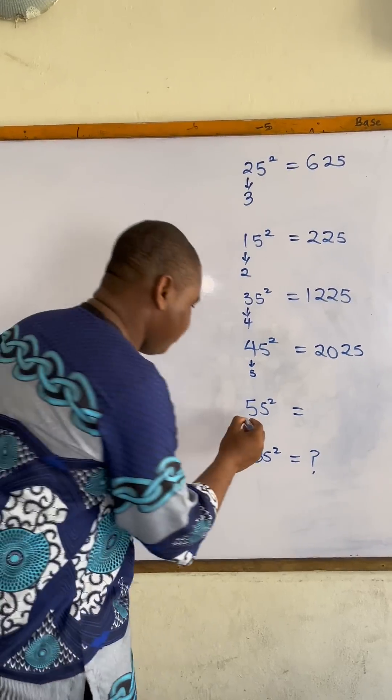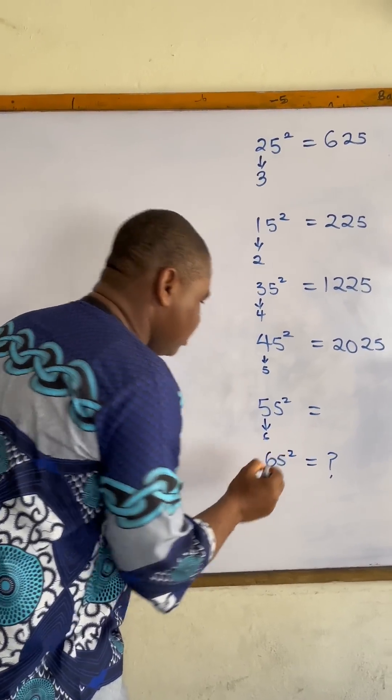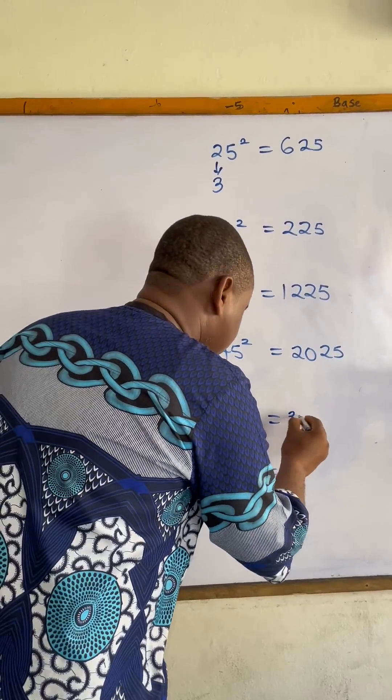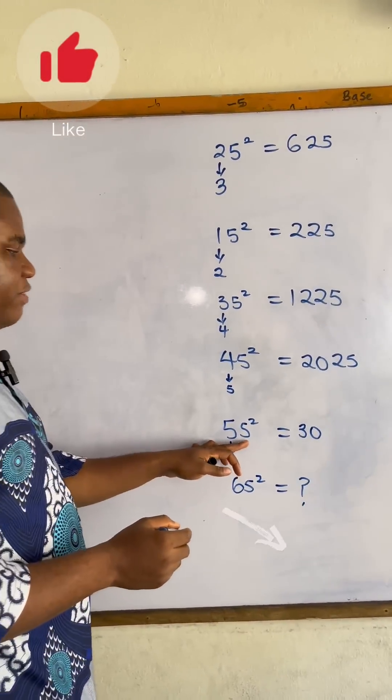The same thing happens for 55. The next number after five is six, so five times six is thirty, five squared is 25. So 55 squared equals 3025.